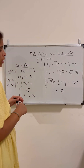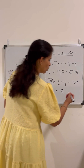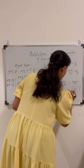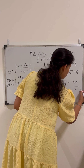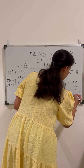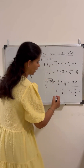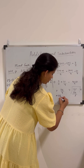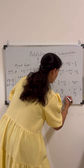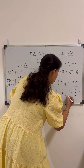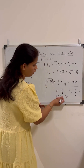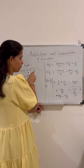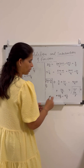We can also convert 35 by 4 back into a mixed fraction. Dividing 35 by 4 gives a quotient of 8 and a remainder of 3, so the mixed fraction is 8 and 3 by 4. This confirms that 3 and 1 by 2 plus 5 and 1 by 4 equals 8 and 3 by 4.